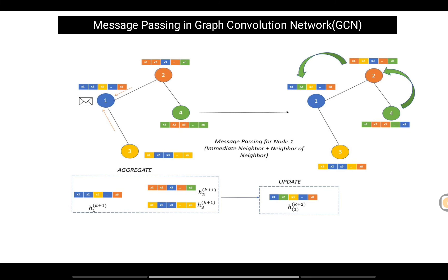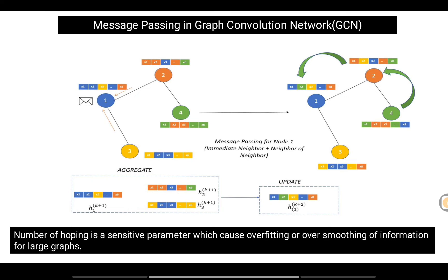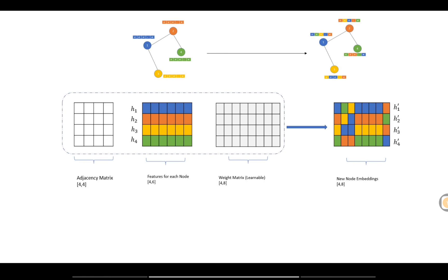The message passing technique incorporates all surrounding nodes one or two hops away to build the optimal node embedding. The number of hops is a sensitive hyperparameter — too many hops can cause overfitting or over-smoothing on large graphs, while too few hops can miss surrounding information. This parameter needs to be chosen carefully.